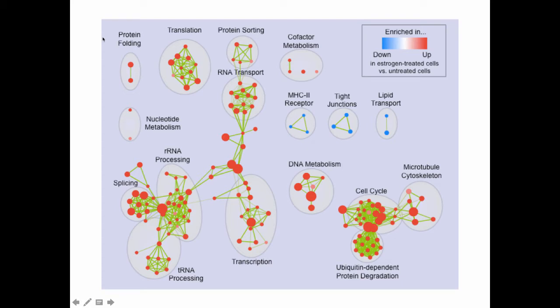The standard enrichment map view doesn't have the circles and labels. Normally you just get the red and blue nodes and green lines. Afterwards we add the circles and labels. We used to do that manually, but now we have a tool called AutoAnnotate that does it all for you. You still have to edit it to make it publication quality, but it helps speed things up. This is pathways related to translation, and here's pathways related to tight junctions. You can quickly see what's going up and down. This visualization helps you get a very quick overview of the dataset, and from that overview you can identify things that are interesting to zoom in on.